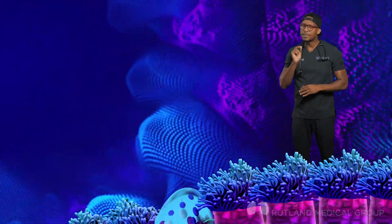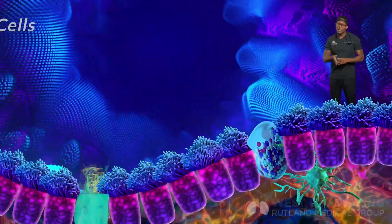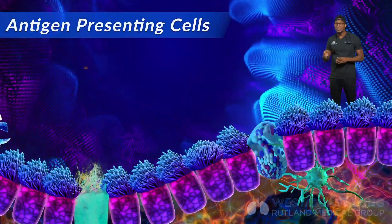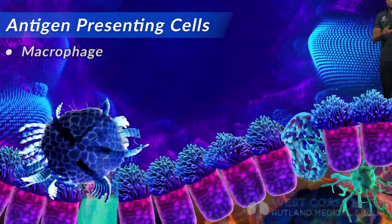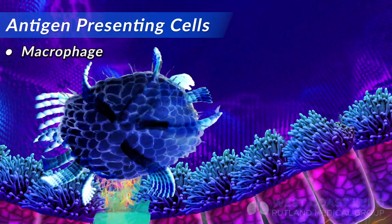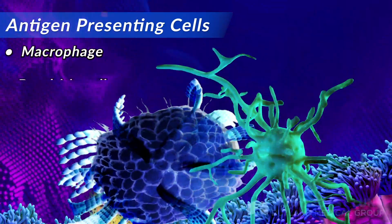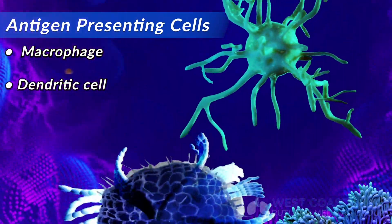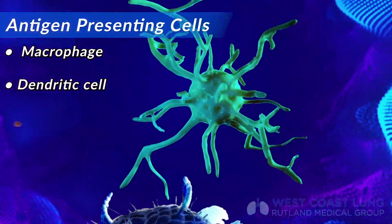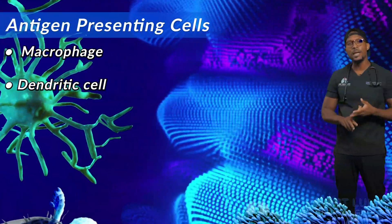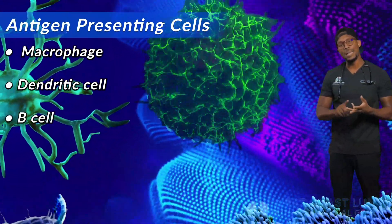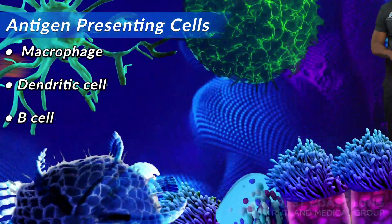There are specific cells which are antigen presenting cells. Those cells include the macrophage, as we discussed, the dendritic cell, as we discussed in a previous episode, as well as a B cell.